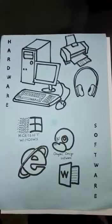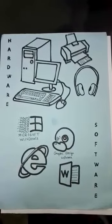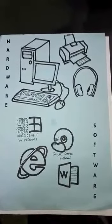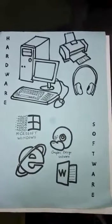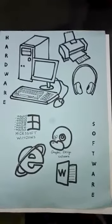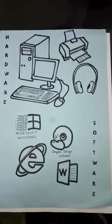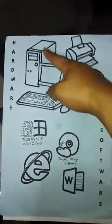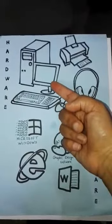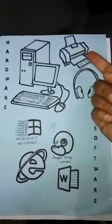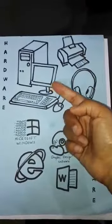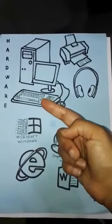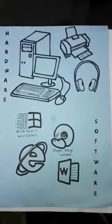Do you remember the difference between hardware and software? The physical parts of the computer are hardware. In simple words, the parts of the computer we can touch are hardware. For example, can we touch the CPU? Yes, we can touch it. Can we touch the monitor? Can we touch the printer? Yes, we can touch the monitor, printer, headphone, mouse and keyboard. These are the hardware.